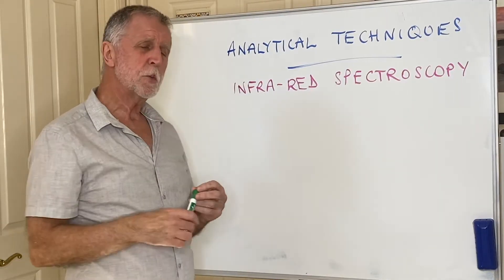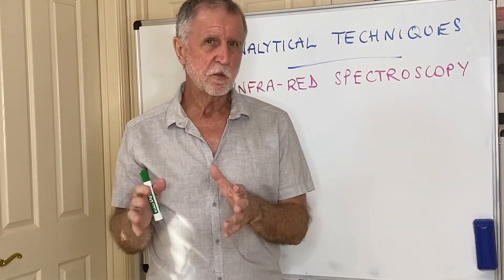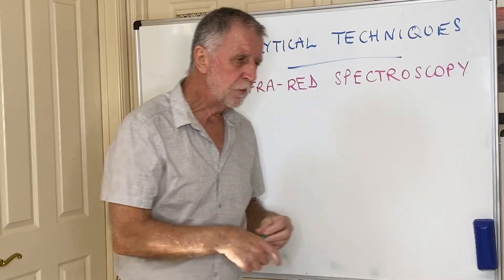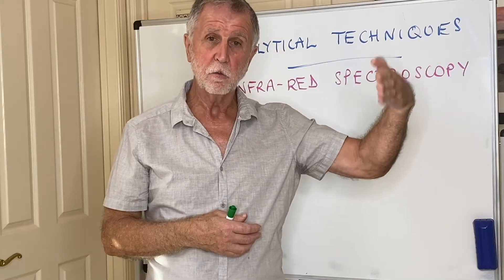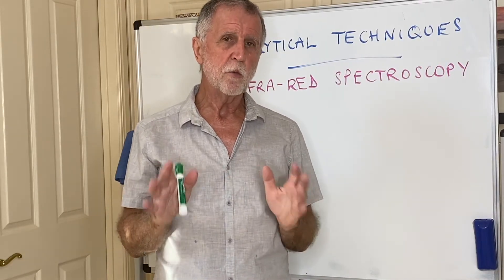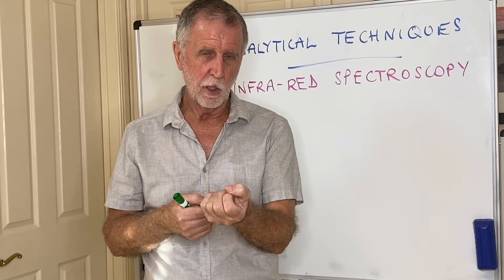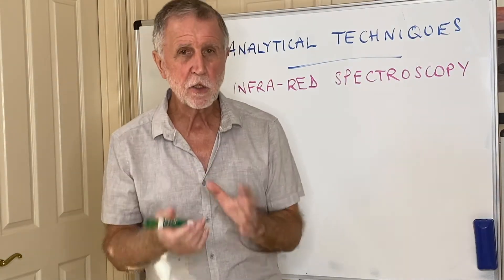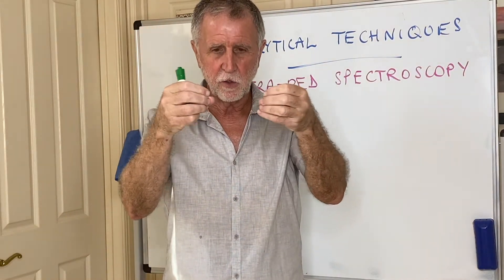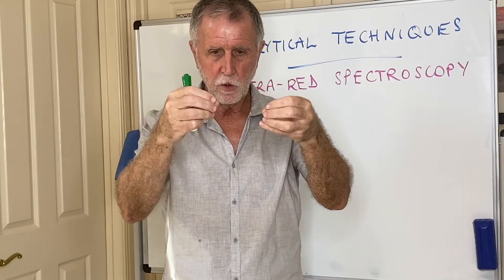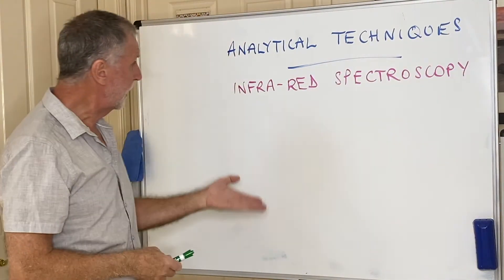The next analytical technique is infrared spectroscopy. You don't have to know exactly how it works, but a little background helps. Infrared radiation is less energetic than visible light and cannot break a covalent bond. However, it can stretch, bend, or twist a covalent bond — think of the bond like a spring, with the two atoms on either side able to stretch, bend, and twist.